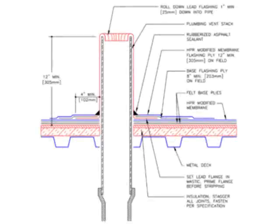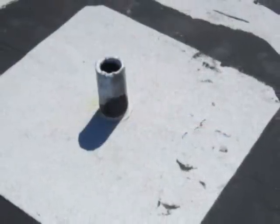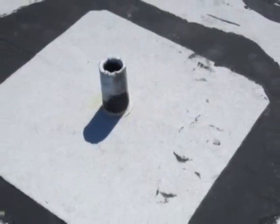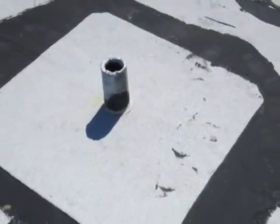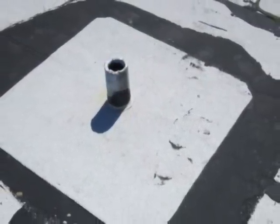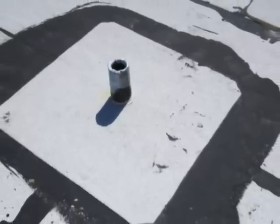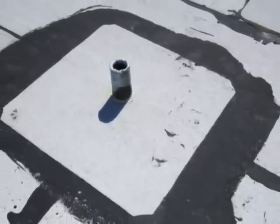A typical penetration that can be found on a variety of buildings is a plumbing stack. Plumbing stacks allow for the proper ventilation of sanitary lines contained within the building. The following are the recommended installation steps for a pipe or plumbing stack.